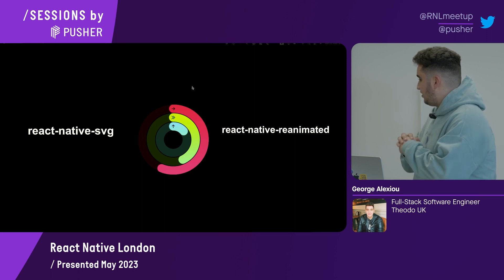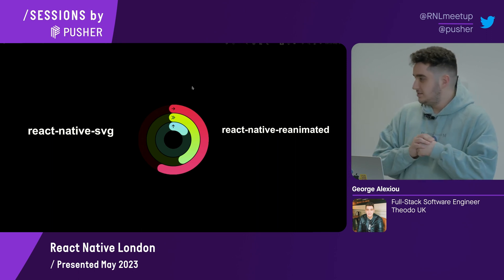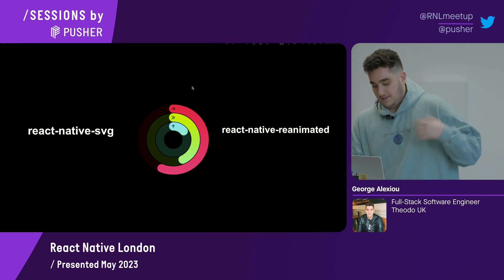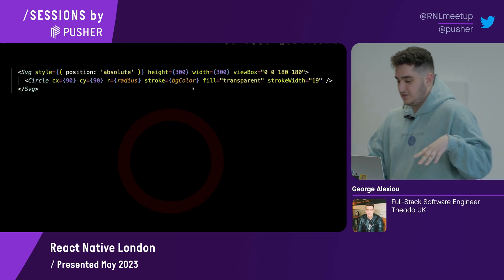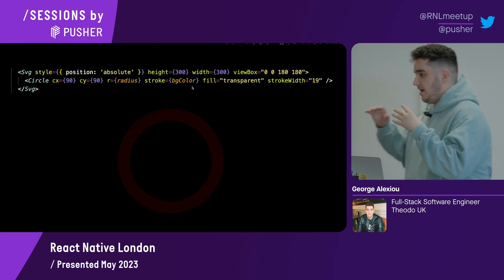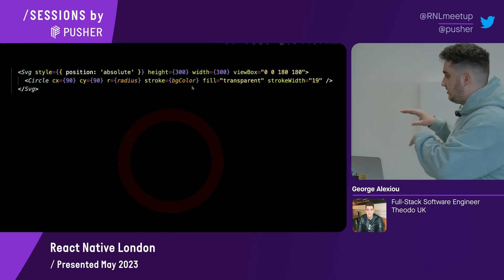Where do we start with something like this? The best way is to start with all of our static content. So obviously we have the background rings.